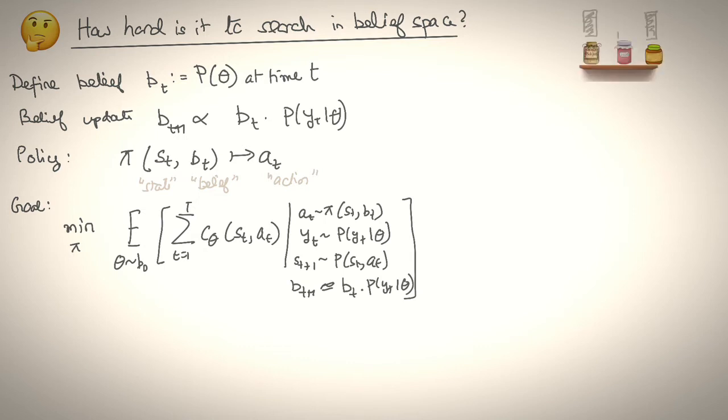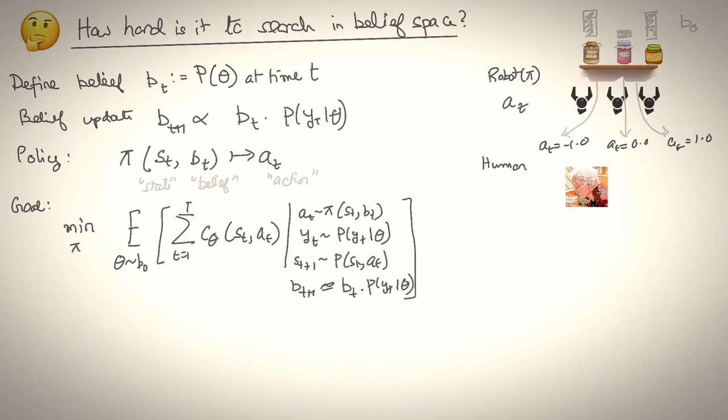So, we begin with three jars and we have a prior over the three of them. So, this is b_0. Now, the robot at this state and belief has three possible actions. It can either try to approach jar 1 or jar 2 or jar 3. For simplicity, let's assume that the first action is minus 1, the second is 0, then the third one is 1. Now, the human can respond to this action with an observation, y_t. This observation could be, for example, go left, or go right, or simply do nothing.